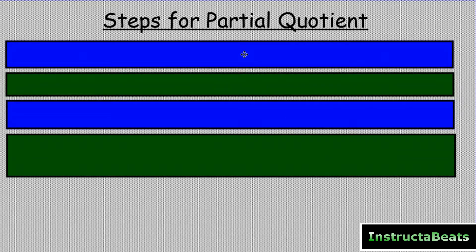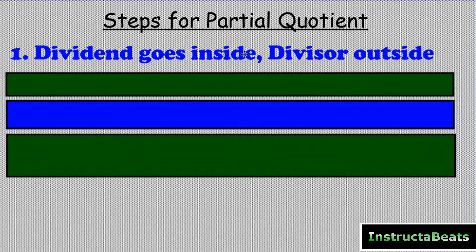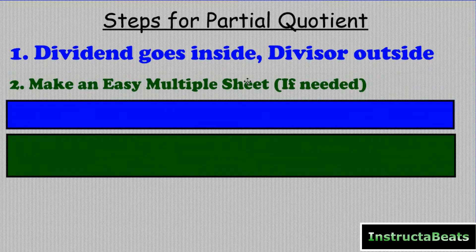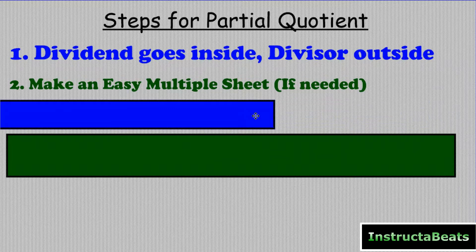So step number one for doing partial quotient division: the dividend goes on the inside, the divisor goes on the outside. Step number two, you're going to make an easy multiple sheet if needed. If you're not real comfortable with your basic facts, you probably won't be comfortable with your basic facts today because we're doing two digit divisors.